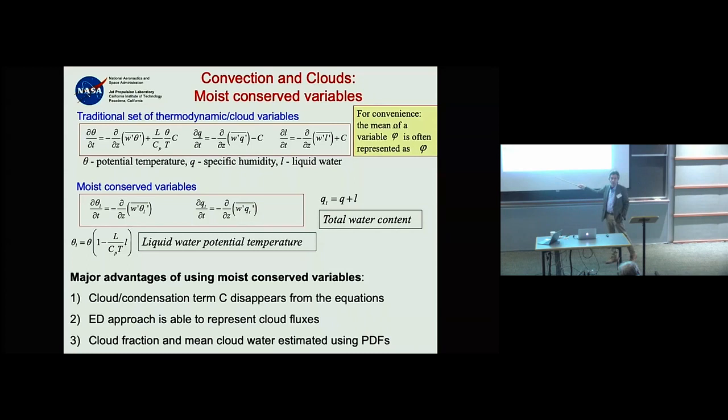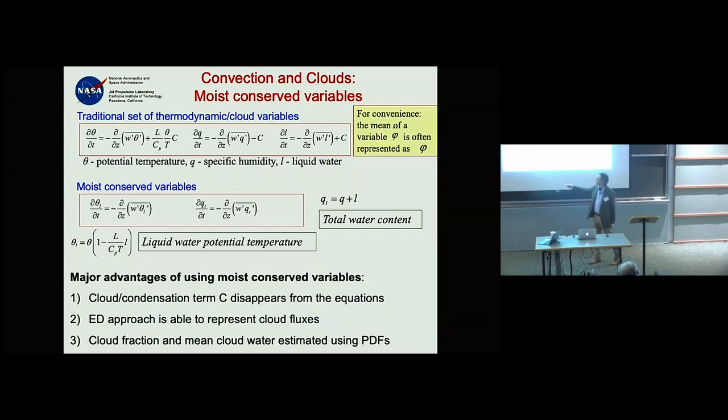If you try eddy diffusivity without conserved variables, you get fluxes for cloud water going in the wrong direction. Using moist conserved variables addresses this. It also enables thermodynamic consistency: you can estimate cloud fraction and mean cloud water using PDFs associated with the distribution statistics.